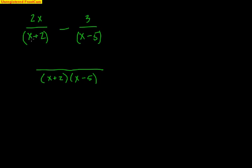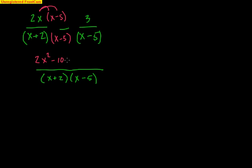That means of course I've got to put one on top and distribute, so I get 2x squared minus 10x. Now back here the (x minus 5) fraction needs an (x plus 2) down there so it has that common factor, which means I've got to put an (x plus 2) on top as well.